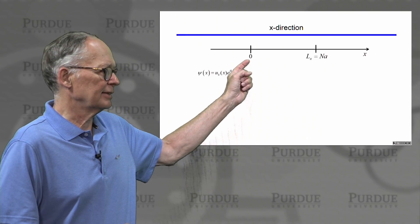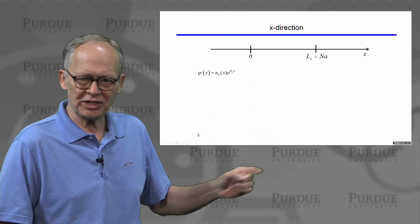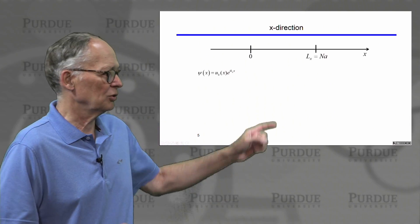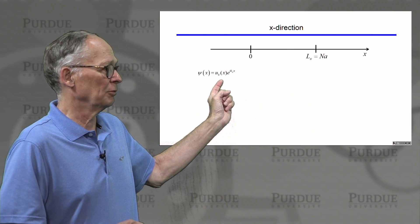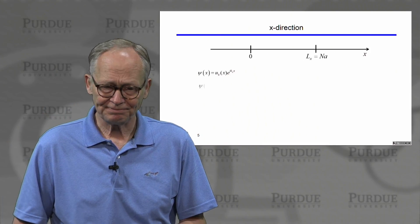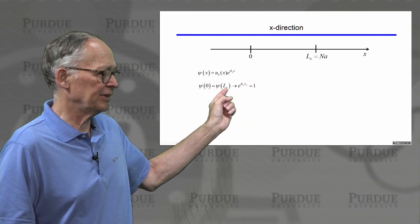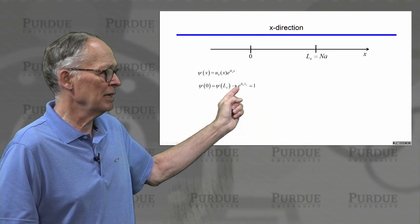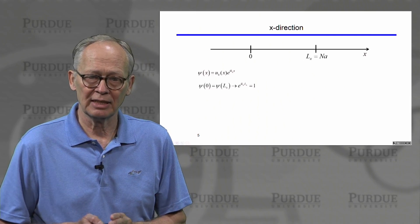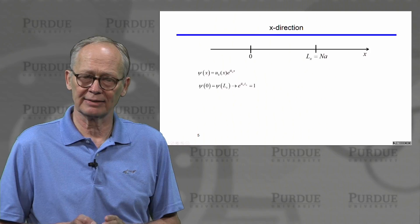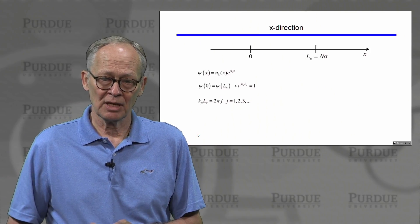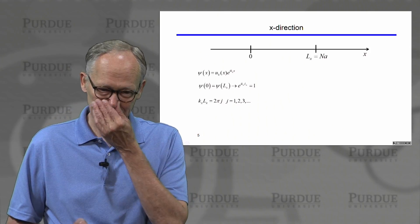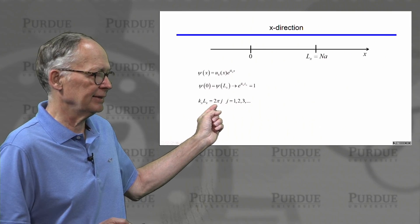Let's look in the x direction. This is x equals zero and x equals Lx, which we measure in units of the lattice spacing — capital N is the number of atoms and a is the lattice spacing. The solutions to the wave equation are Bloch functions: a periodic part times a wave solution. At x equals zero, we must have the same wave function as at x equals L. The periodic part repeats at every lattice spacing, so imposing periodic boundary conditions leads us to conclude that e to the i kx times Lx must equal one. This means kx times Lx must equal an integer number of 2π.